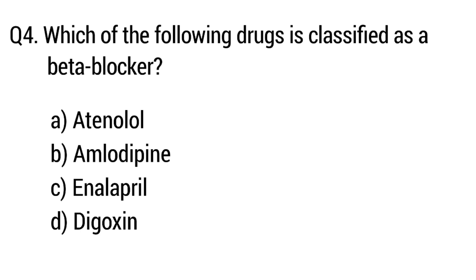Question number 4. Which of the following drug is classified as a Beta blocker? The right answer is option A: Atenolol.